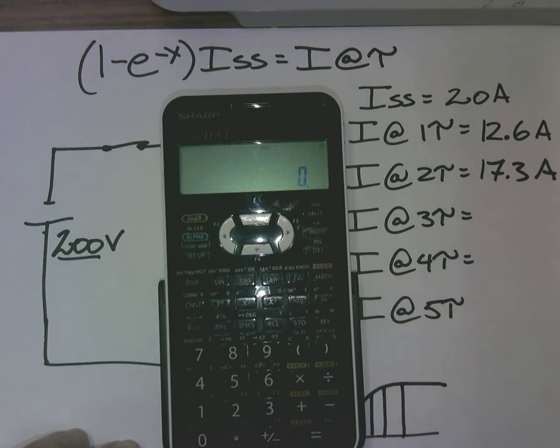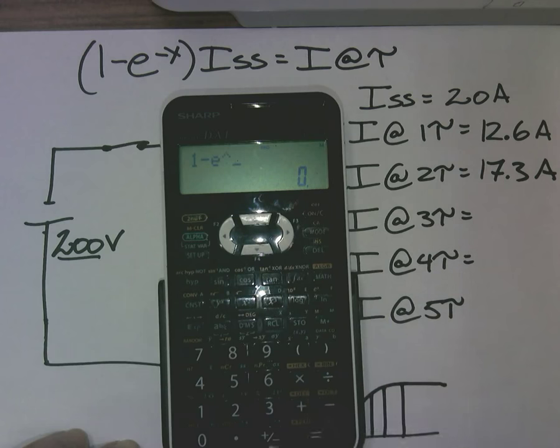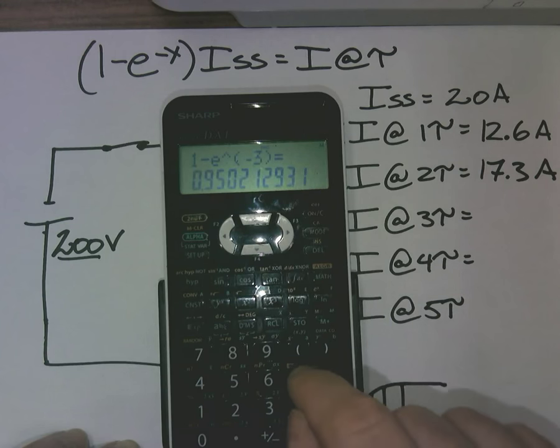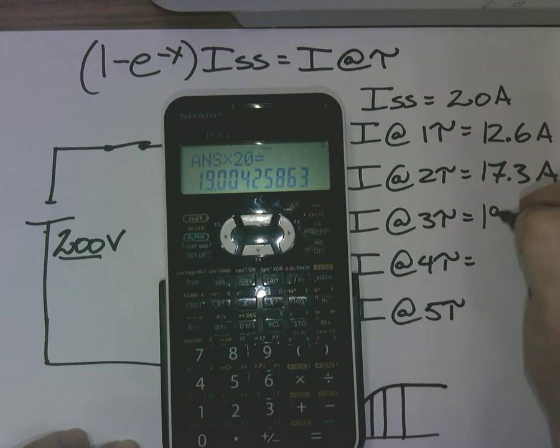Let's keep it going. 1 minus second function e to the negative 3 equals, multiply that by the steady state current, gives you 19 amps at that point.